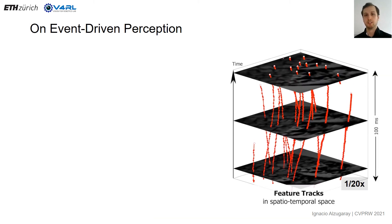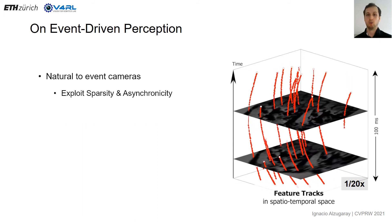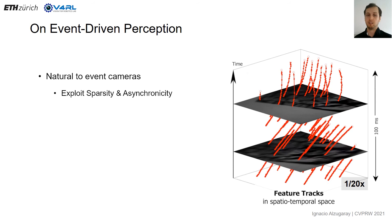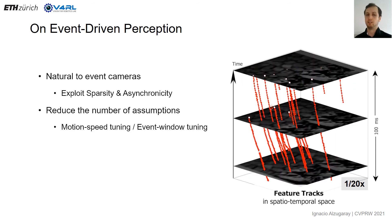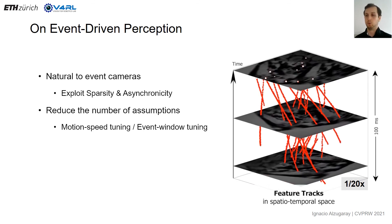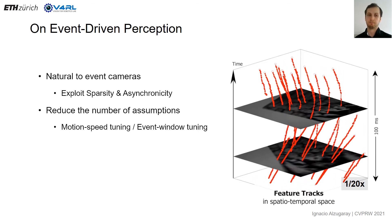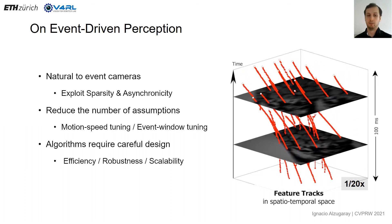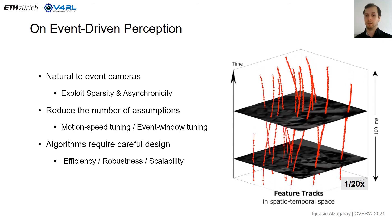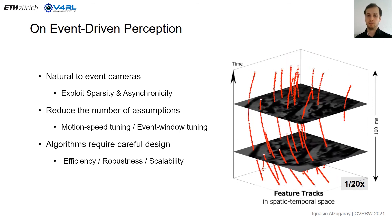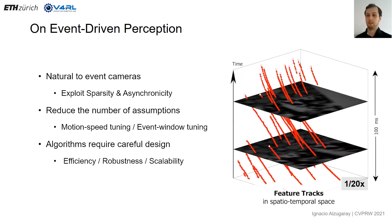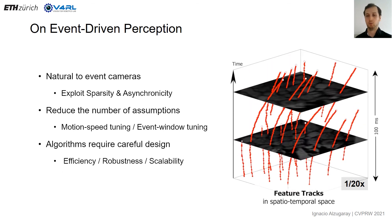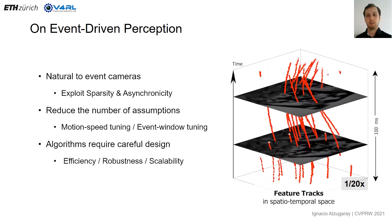To conclude with some remarks about event-driven perception: event-by-event algorithms are the natural way to process the output of event cameras because they explicitly exploit the sparsity and asynchronicity of the data, and they reduce the number of assumptions on camera motion or expected scene texture. On the other hand, they require careful design to maintain minimum efficiency for real-time realistic applications, and to robustify the algorithms given that you are processing one event at a time. Most importantly, especially as new event cameras with higher resolution appear every year, scalability to higher resolutions remains an open challenge. Thank you very much for your attention.